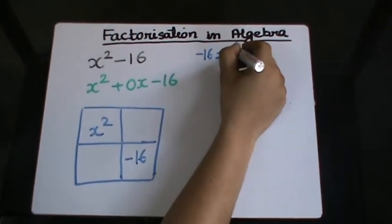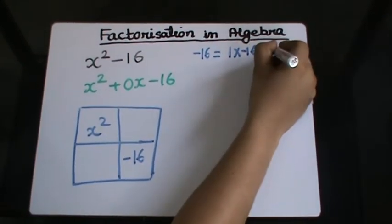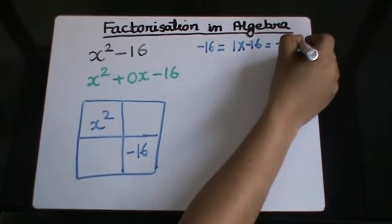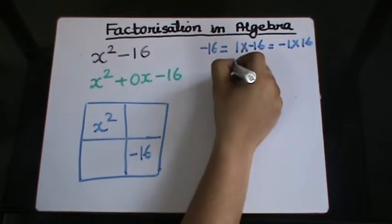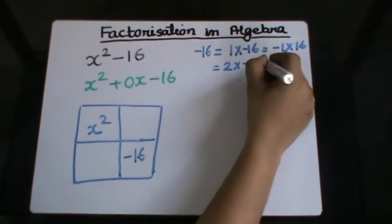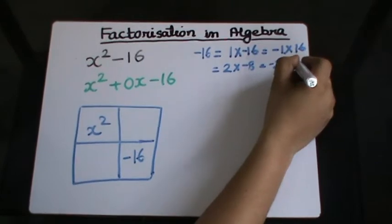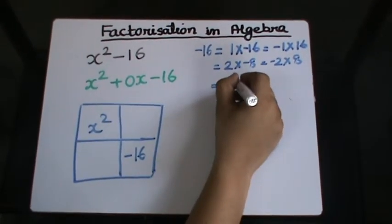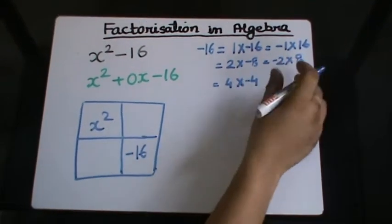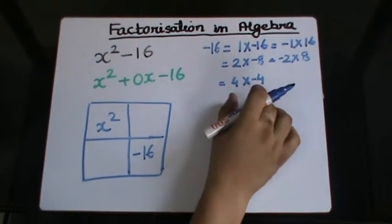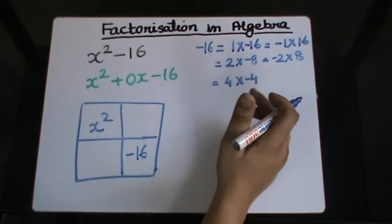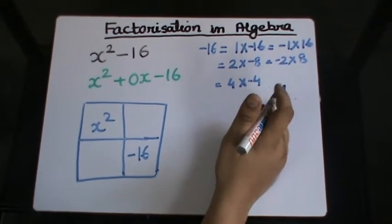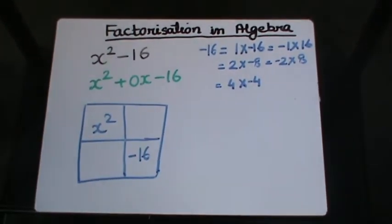The factor pairs are: 1 × -16 and -1 × 16; 2 × -8 or -2 × 8; 3 is not possible; and 4 × -4 or -4 × 4. These are the maximum possible factors of -16, and I need to combine the factors.